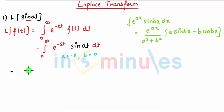So I get here integration e raised to minus st divided by s square plus a square, times minus s sin at minus a cos at.